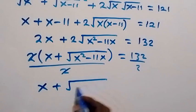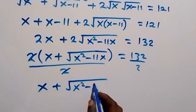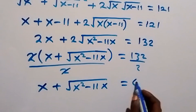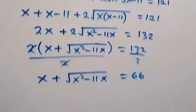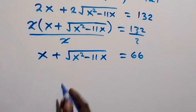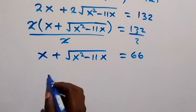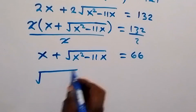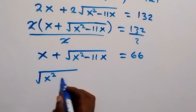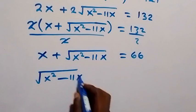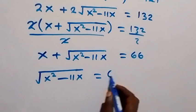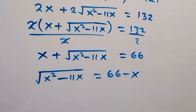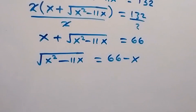So we have x + √(x² − 11x) = 66. In the next step, we take x to the right side, so √(x² − 11x) = 66 − x.